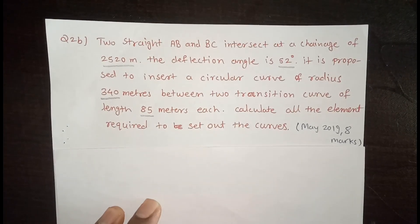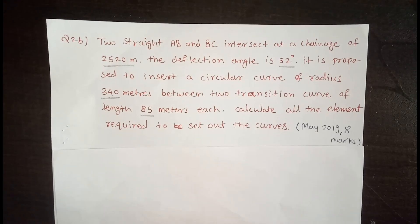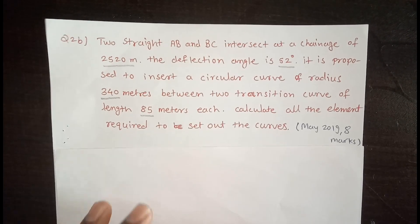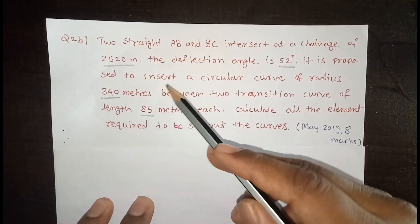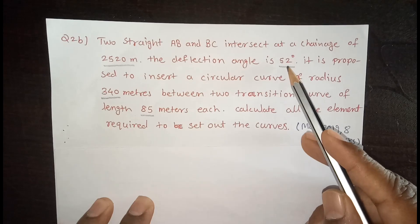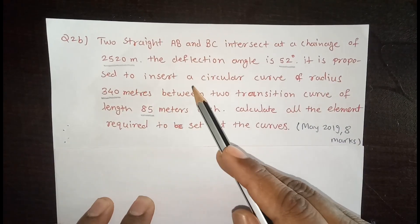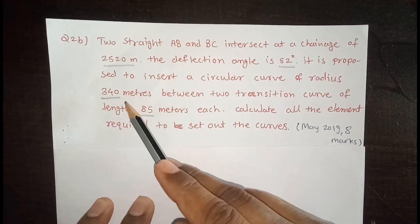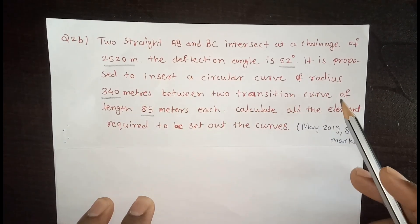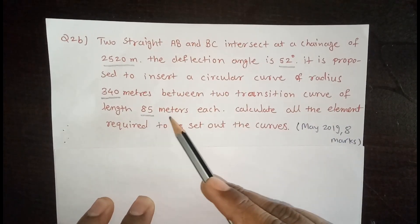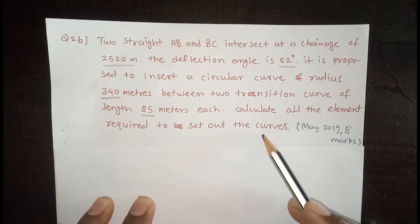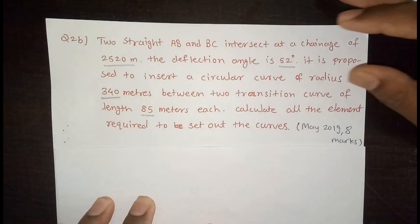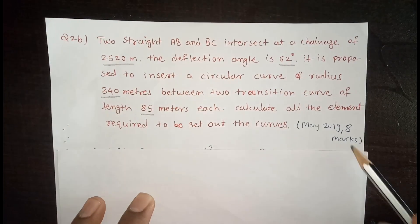Hello Friends. Today we will see a numerical on Transition Curve. Two straights AB and BC intersect at a chainage of 2520 meters. The deflection angle is 52 degrees. It is proposed to insert a circular curve of radius 340 meters between two transitions of length 85 meters each. Calculate all the elements required to set out the curve. This question was asked in May 2019 for 8 marks.